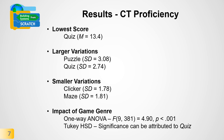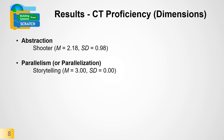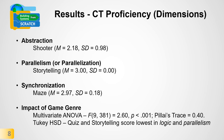Looking at individual CT dimensions: shooter games scored highest in abstraction with a mean of 2.18; storytelling games scored the maximum in parallelism; maze games scored almost the maximum in synchronization with a mean of 2.97. A multivariate ANOVA found a significant impact of game genre on each individual CT dimension. A post-hoc test revealed that quiz and storytelling games drive this significance, as they scored the lowest in logic and parallelism consistently — always below 2 in each of these two dimensions.